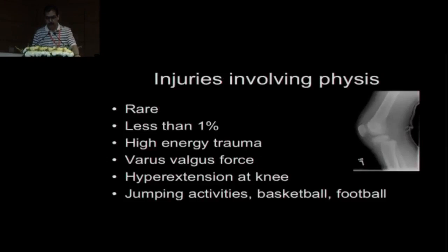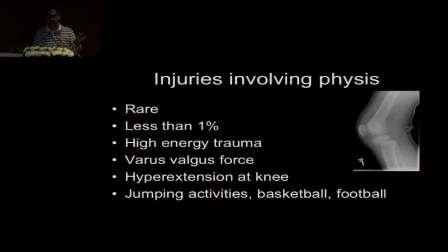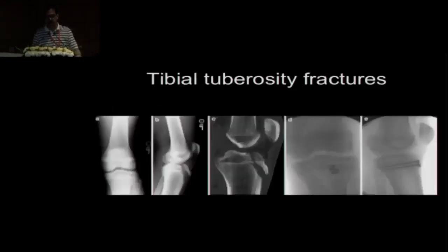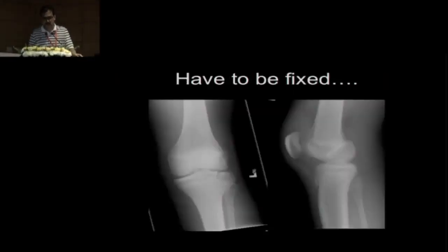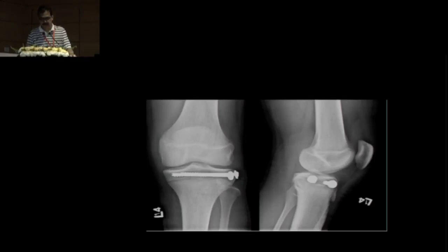If the injury is involving the physis, you have to do some kind of fixation. These are associated with high sports trauma. The important point is that you will have to fix it by one way or another. Particularly tibial tuberosity fractures - these are fractures you can't manage by conservative treatment, you need to fix them. If injuries of the proximal physis are present, they require some kind of fixation, either K-wires or screws. Most of the time, surgery is required.